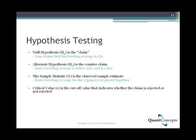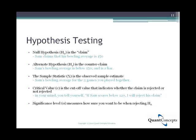The critical value is simply the cutoff value you assign to the sample statistic to determine whether the null hypothesis or claim is rejected or not. In our example, the critical value is 120 — if Sam's average score for the three games is below 120, you will reject his claim. Finally, the significance level measures how sure you want to be when rejecting the null hypothesis. The smaller the significance level, the more sure you are when rejecting it, and the smaller the rejection region. For your mum's case, you use a smaller significance level; for Sam's case, you are willing to use a larger significance level.